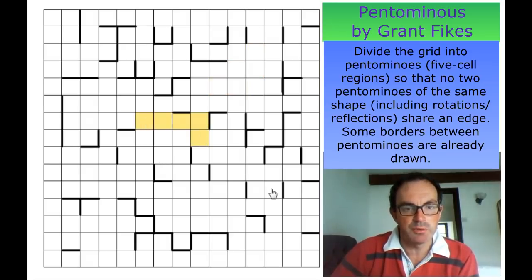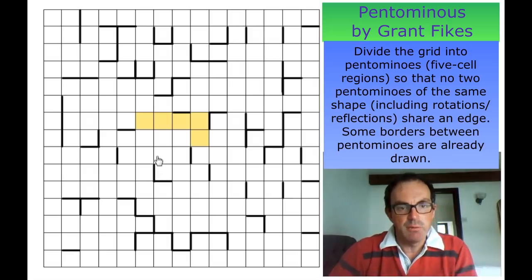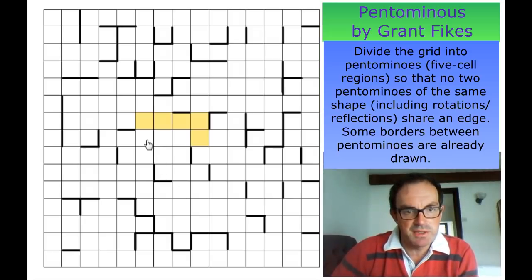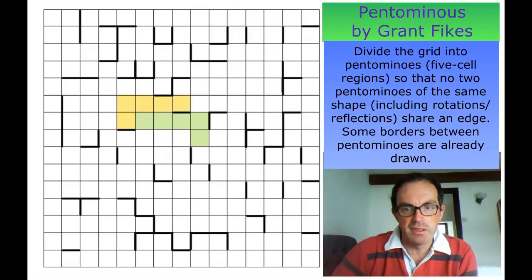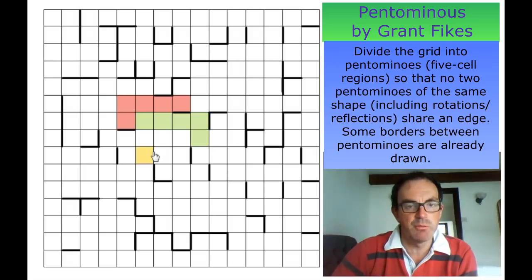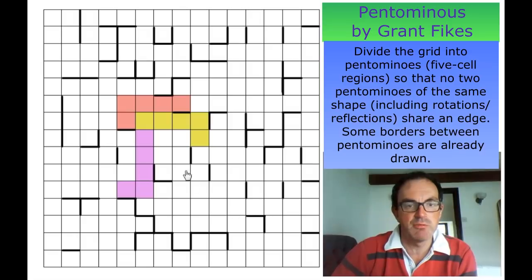So if we had an L-shaped region here, it would not be possible for another L-shaped region to be connected to it, because although it's a reflection it's still considered an L-shaped region, and as it's touching orthogonally that would not be allowed. Similarly, putting that shape in would not be allowed either — it's an L-shaped region touching another L-shaped region. This is what we're tasked with doing.